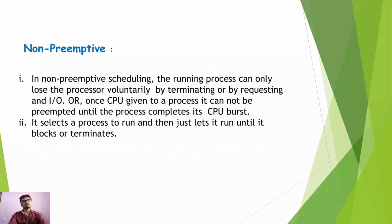Now we are going to see non-preemptive scheduling. In non-preemptive scheduling, the running process can only lose the processor voluntarily by terminating or by requesting. And once the CPU is given to a process, it cannot be taken away until the process completes its CPU burst. It selects a process to run and then just lets it run until it blocks or terminates.